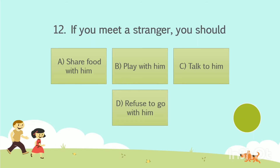To the twelfth question now. If you meet a stranger, you should — Option A: Share food with him. Option B: Play with him. Option C: Talk to him. Option D: Refuse to go with him. Your time starts now. The answer is Option D, Refuse to go with him.